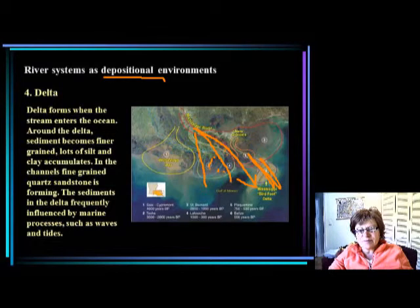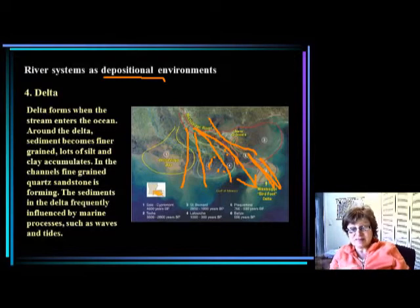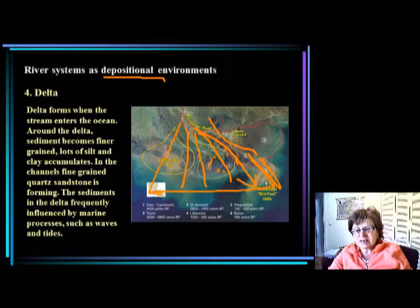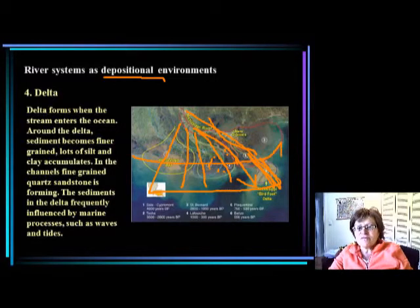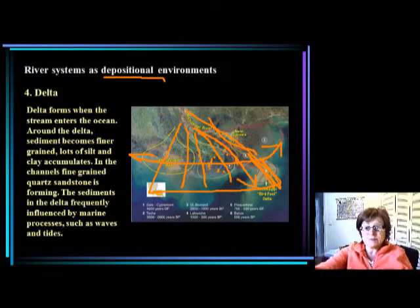With all the sediment being deposited in between, you get a delta shape with typical split rivulets. It basically looks like an alluvial fan, and it is very similar, except the sediment is mostly medium to very fine-grained sand with a lot of silt and clay. The delta can also shift across a huge delta plain, so the stream is not permanently in one area but moves back and forth.